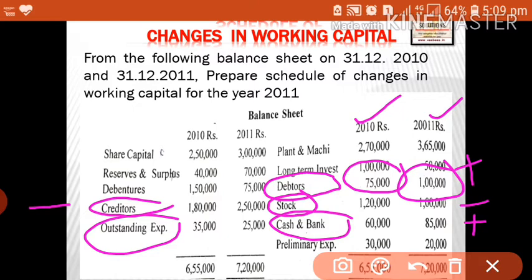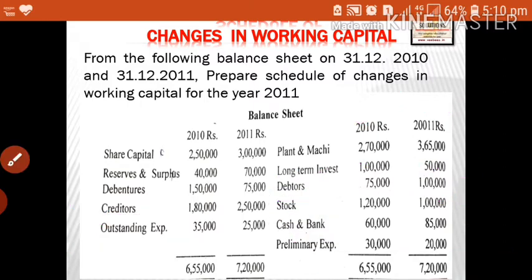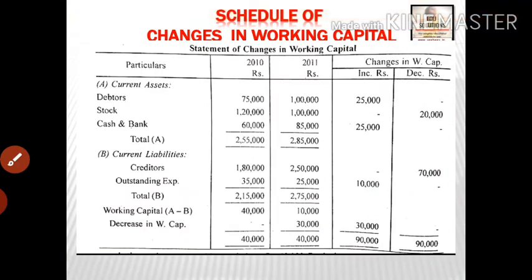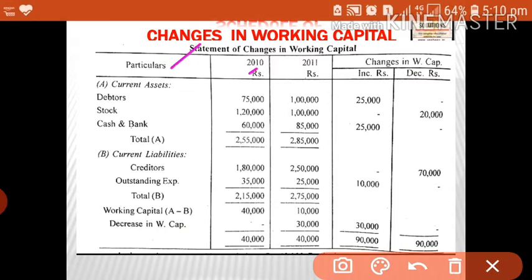Creditors increased, so it is shown in the decrease column because an increase in current liability decreases working capital. We show 70,000 in the decrease column. For outstanding expenses, 35,000 to 25,000 — there is a decrease of 10,000, but it is shown in the increase column because a decrease in current liability increases working capital.